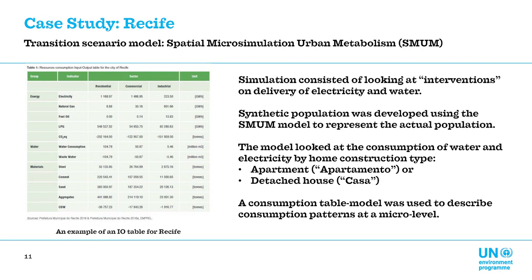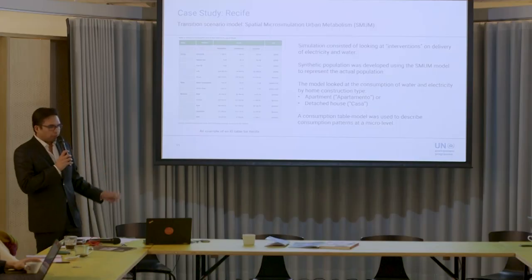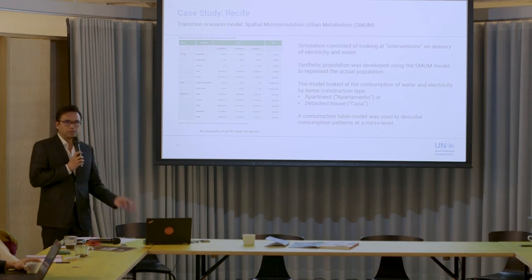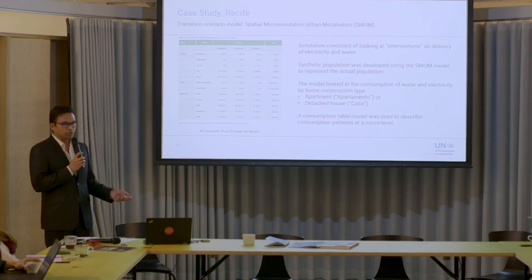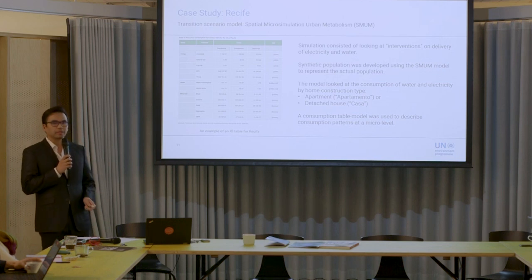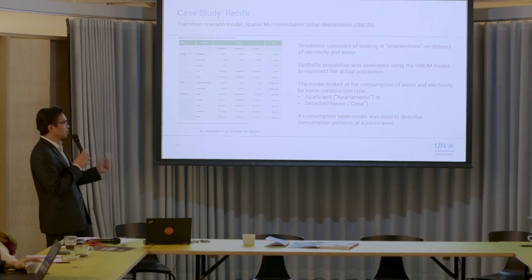The idea was to simulate policy interventions on the delivery of electricity and water. These interventions capture not only built infrastructure for basic service delivery but also different policies that can be put in place to regulate electricity and water use and delivery by the city — for example, aiming to reduce electricity use by 20 percent in the city. The model created a synthetic population to represent the actual population, looking at current consumption of water and electricity by type of home construction, either apartments or detached houses. This was quite relevant because a lot of people in Recife were living in detached houses, where the density — number of people per house — was actually quite low.